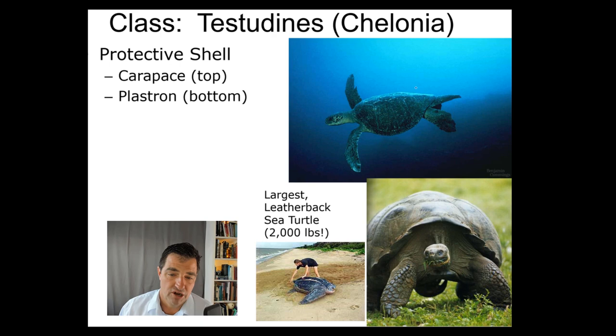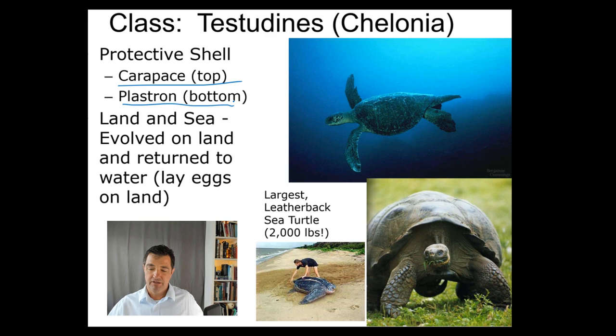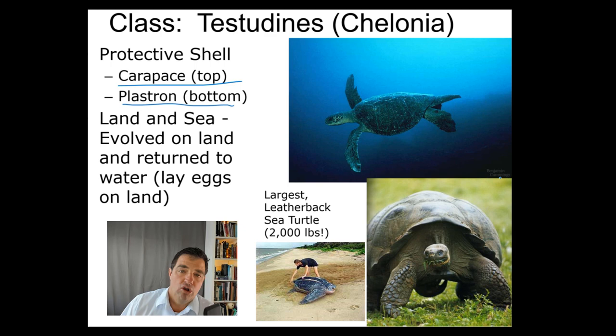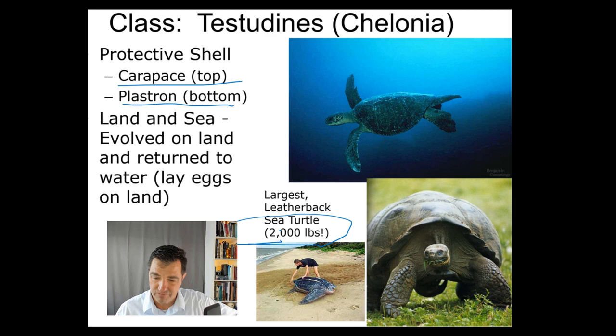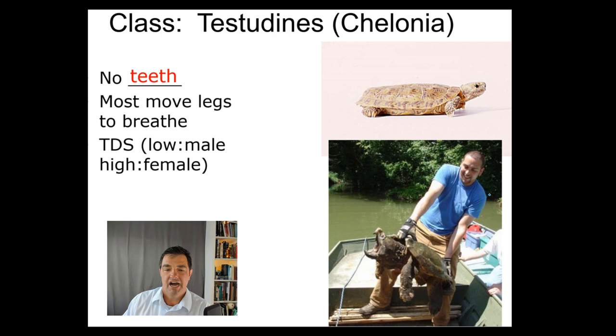First, the Testudines, also called Chelonia — the turtles. They have a shell, which is the most obvious thing. They have two parts: the top of the shell called the carapace, and the bottom called the plastron. There are both land turtles and sea turtles, but they all evolved from a land ancestor and some returned to the water. The largest is the leatherback sea turtle, which can be very big — about 2,000 pounds. All turtles have to return to land, even if they live in the ocean or fresh water, to lay their eggs.